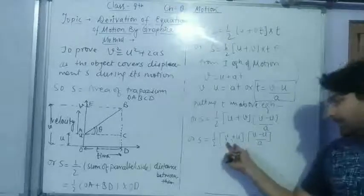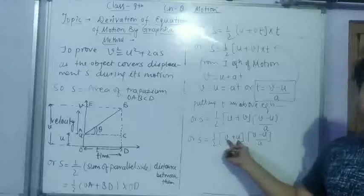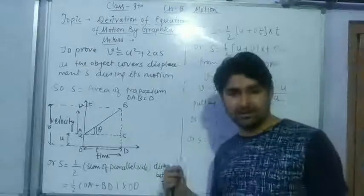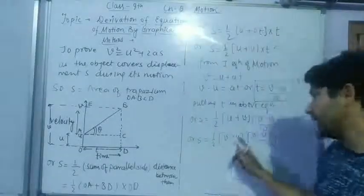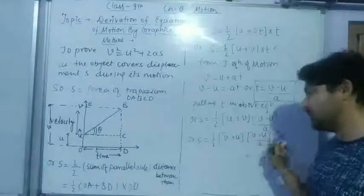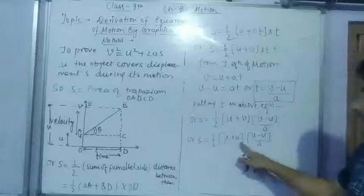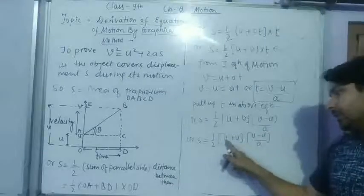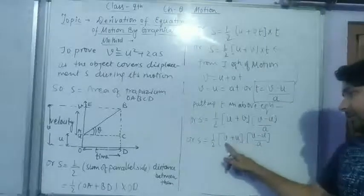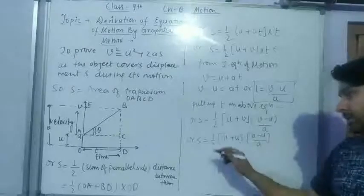Now there's a formula in mathematics, A² minus B² equals to A plus B, A minus B. This means if we take V as A and U as B, so we have a formula generating here.